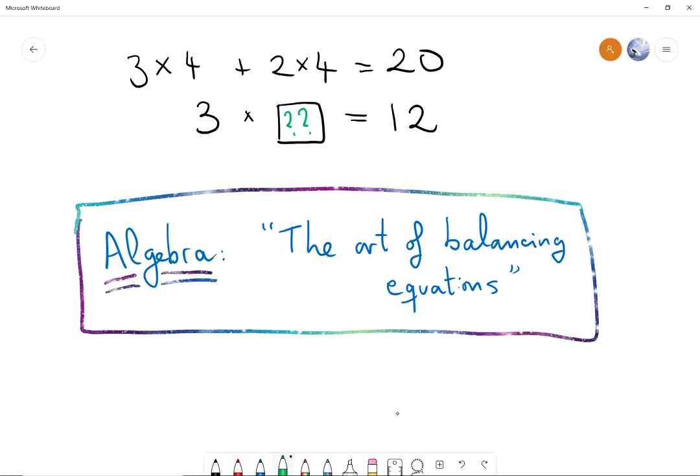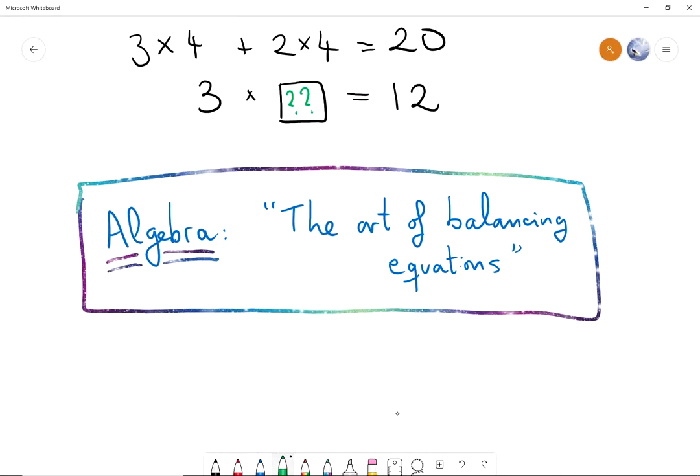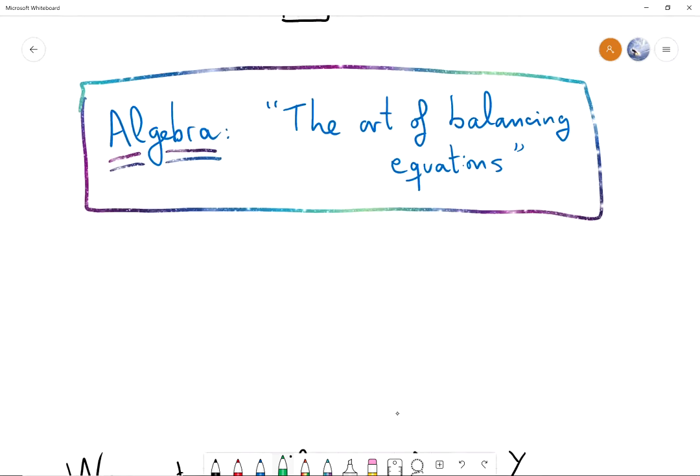So remember though, that we learned that algebra means the art of balancing equations. So our job is to find what numbers fit in these boxes to balance the equations, to find these numbers that will make equations true. For example, those numbers that we need to find, those are the variables, and we usually write them like so.